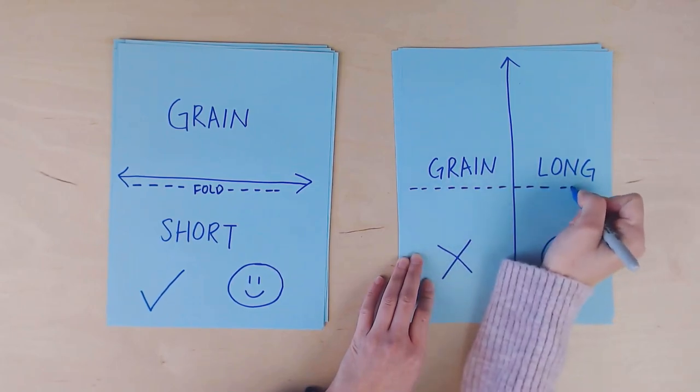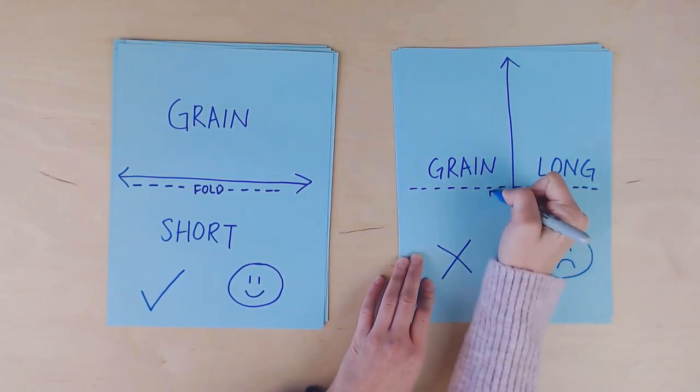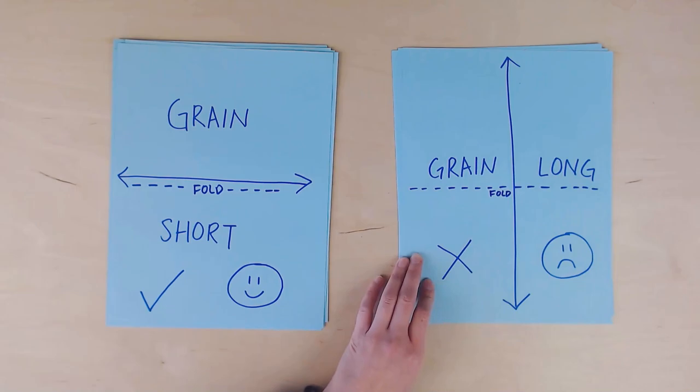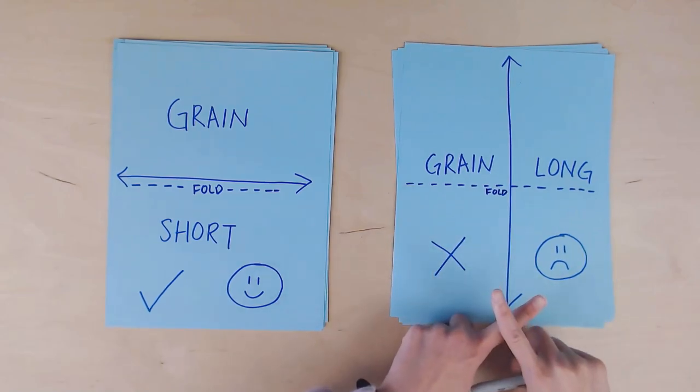For this other stack, the paper is grain long. When you fold it in half, the grain is not parallel to the spine. It is going across the spine. So this is wrong.